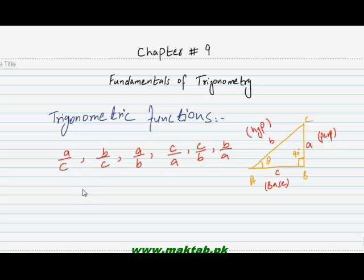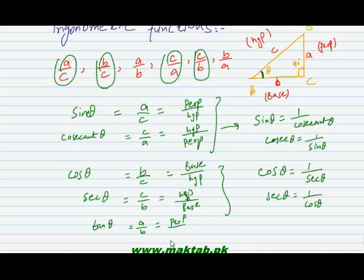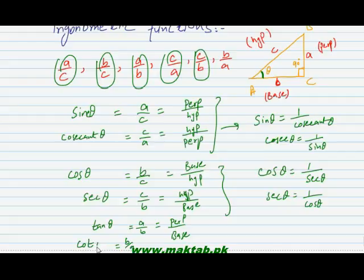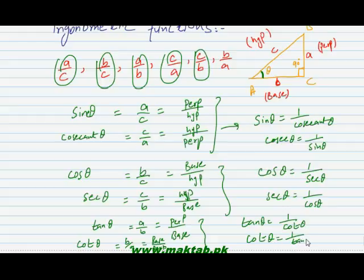Now let's see the ratios. Perpendicular over base — tangent theta is equal to perpendicular over base, so our ratio is A over B. Now B over A we call cotangent theta, which equals base over perpendicular. So tangent theta is equal to 1 over cot theta, or cot theta is equal to 1 over tangent theta.